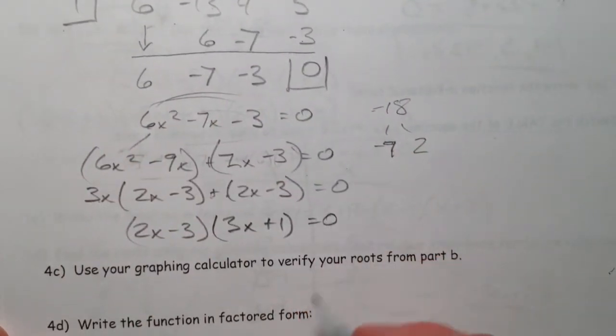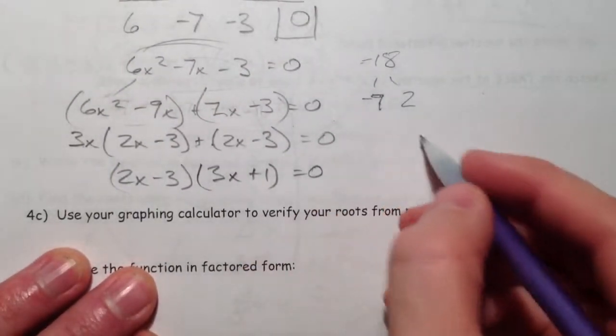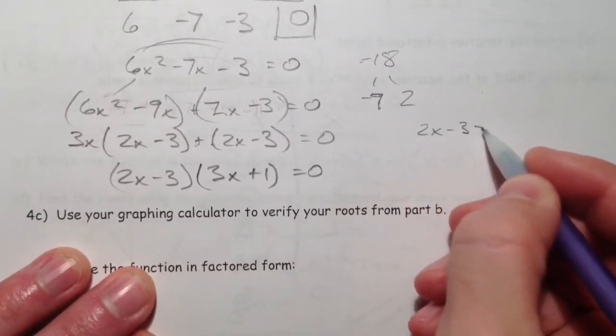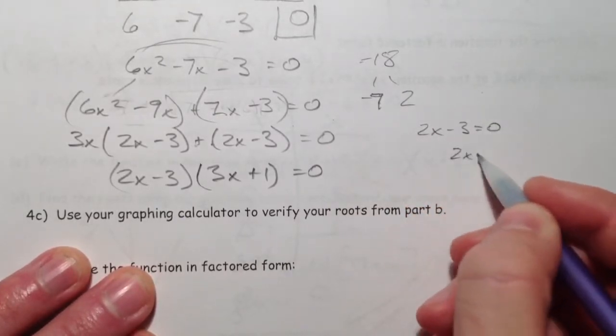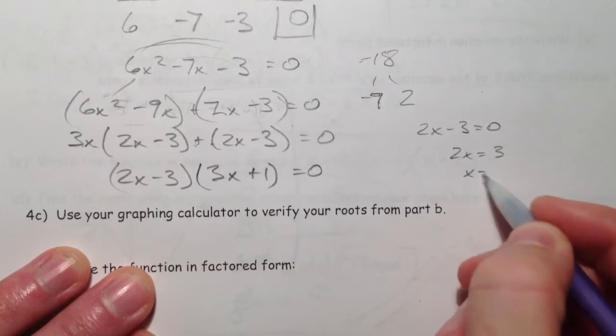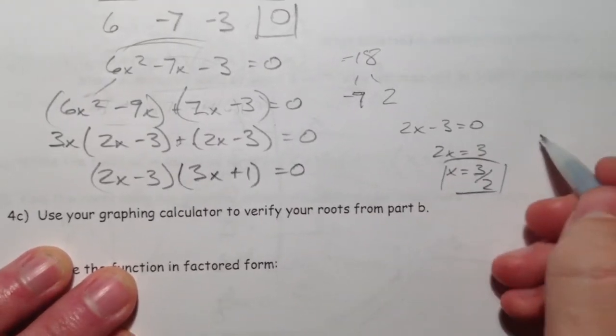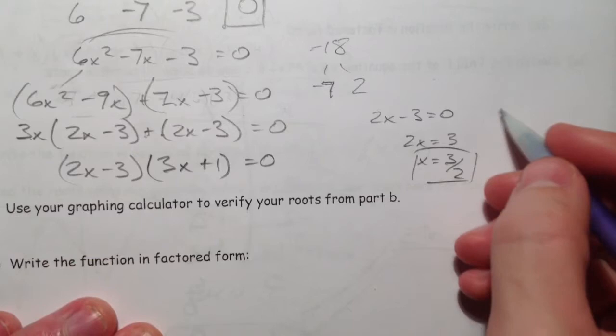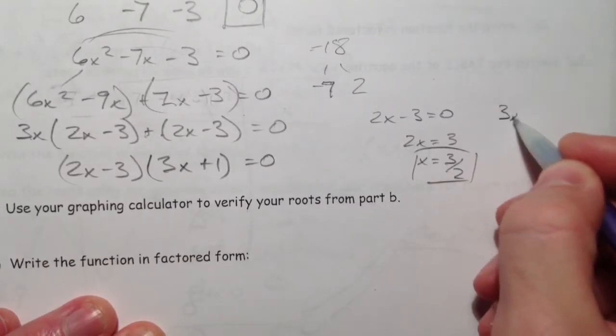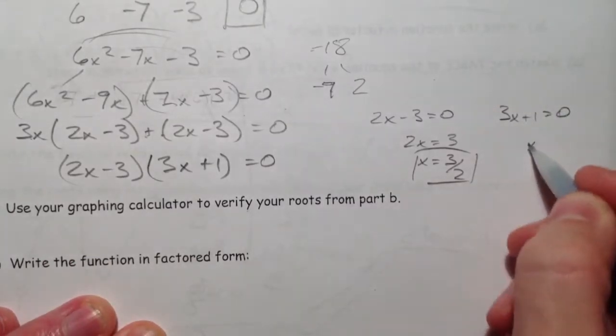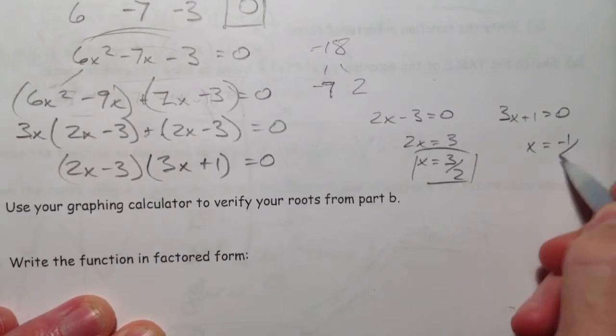And so you get 0. So either 2x minus 3 equals 0, and 2x equals 3, so x equals 3 over 2, or 3x plus 1 equals 0, so x equals negative 1 divided by 3.